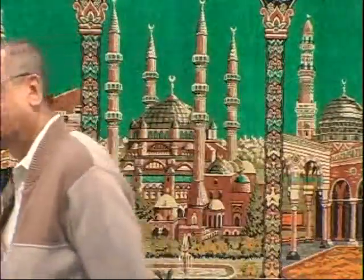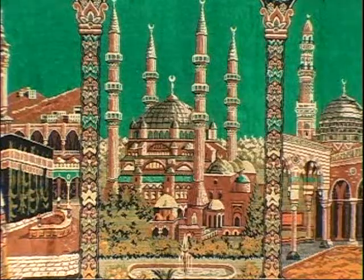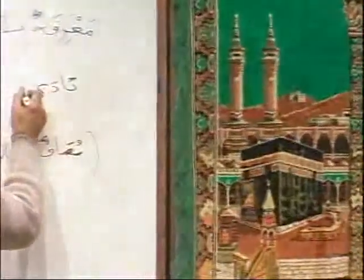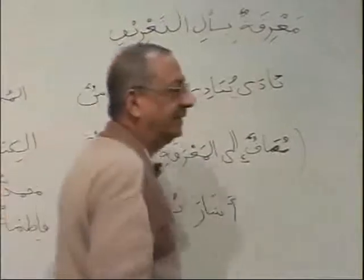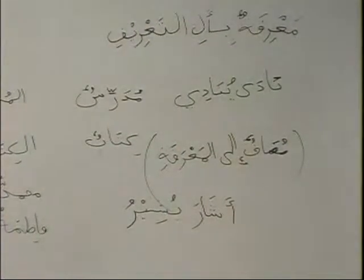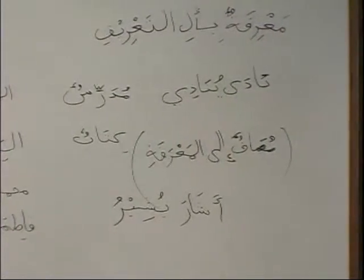Yunadi — what is yunadi? Nadi, nada — Form Three. Yunadi: fa'ilun mudarihun marfoon, wa alamatu rafaihi dammatul muqaddara. Fa'il mustatir takadiru huwa. Ya waladu — is waladu definite? Yes. Why? Because of harfu nida. Da — what is da? Fi'alama. Puts haadihi l-ashyaa — is haadihi definite? Yes. And what is ashyaa? Badal.